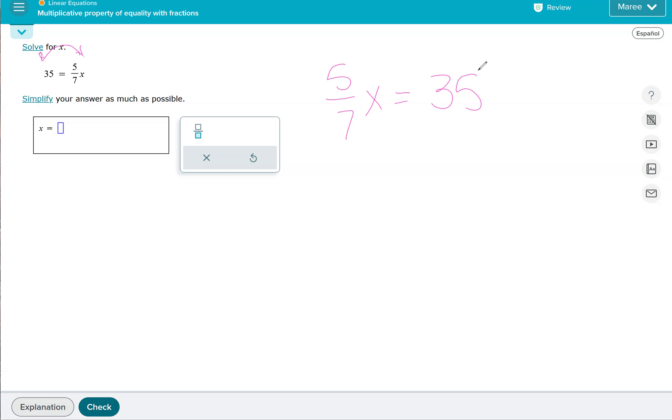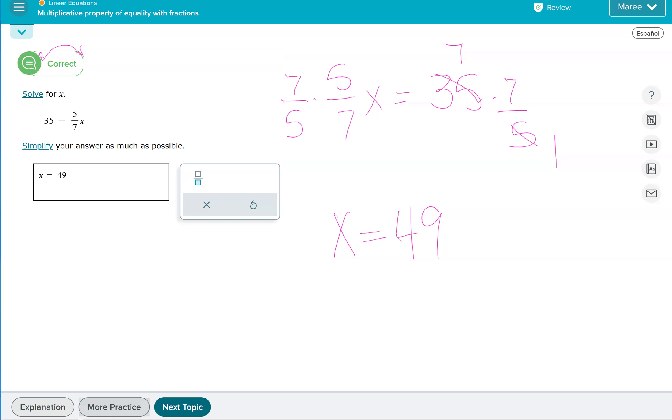So we are multiplying x by 5/7 and we want to get 1x. So we're going to multiply by the reciprocal of 5/7, which is 7/5. And we have to do it to both sides. So we have x. Let's divide 35 by 5 first and 5 by 5. So we get 7/1. Our answer is 7 times 7, which is 49. Oh, that was our answer for the first one. Okay, that's the end of the lesson.